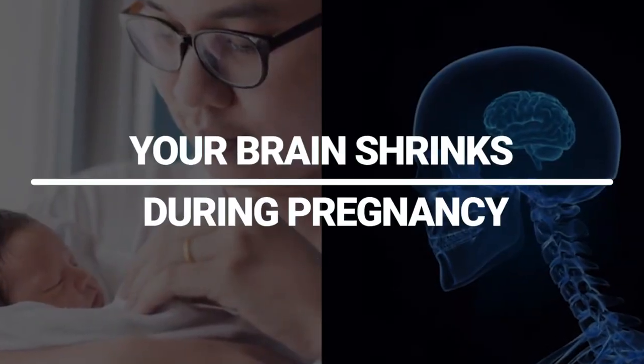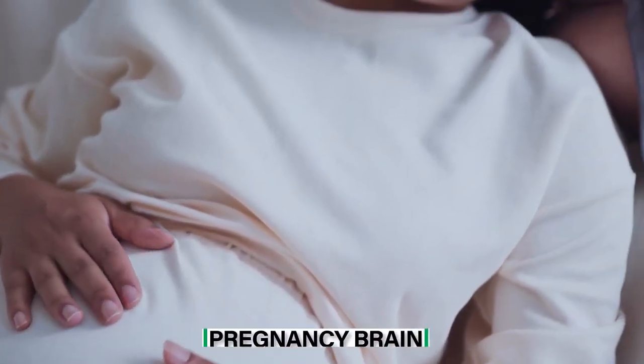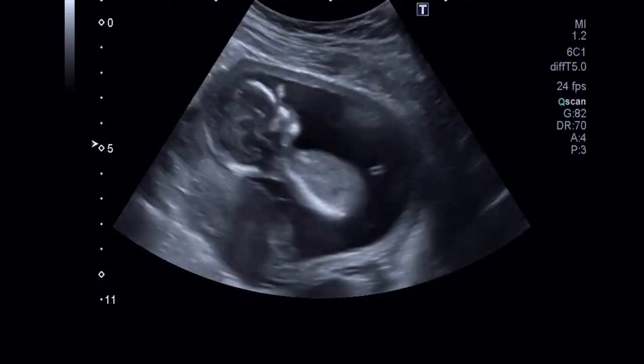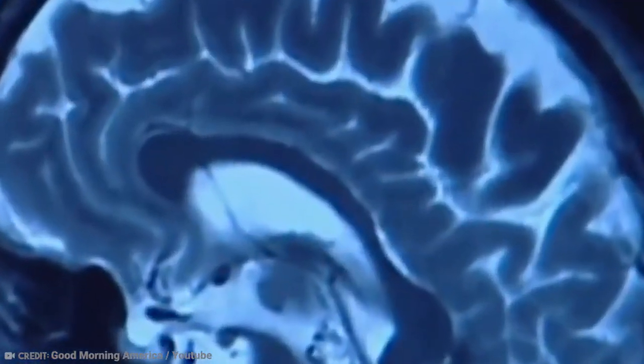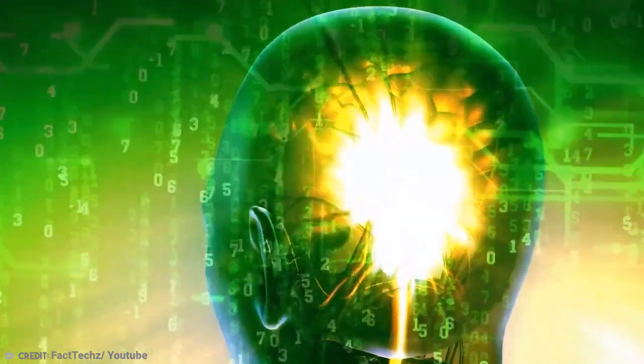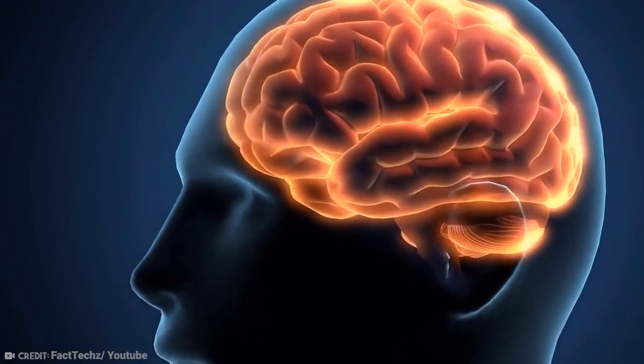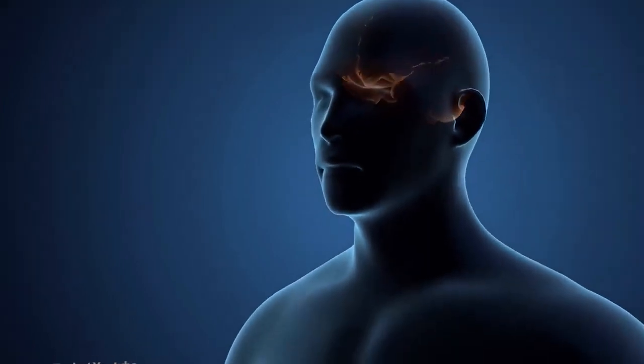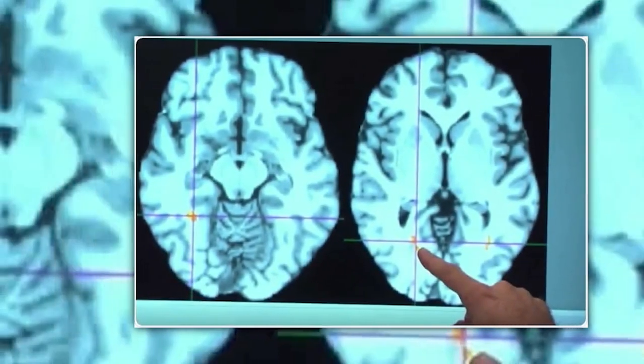Your brain shrinks during pregnancy. This fact gives an entirely new meaning to the term pregnancy brain. Pregnant women exhibit decreased cortical thickness and surface area in the grey matter regions of the brain, according to a 2017 study published in the journal Nature Neuroscience. The cerebral cortex, where we process people's emotions and nonverbal cues, is where this loss of grey matter is most prevalent. It is particularly prevalent in areas that affect social cognition.